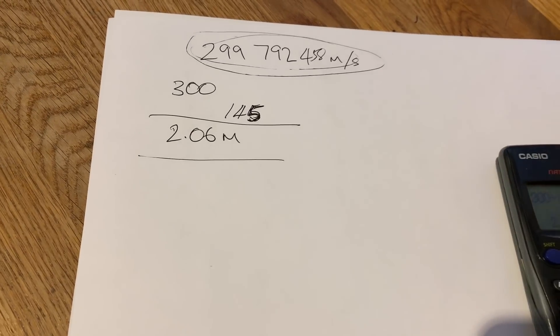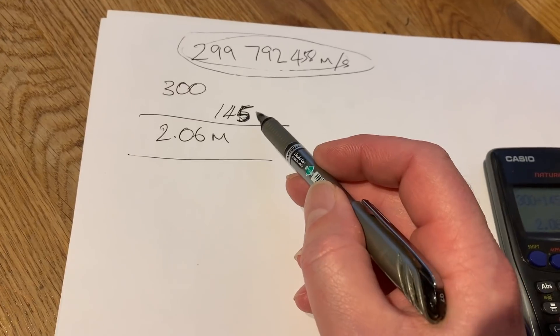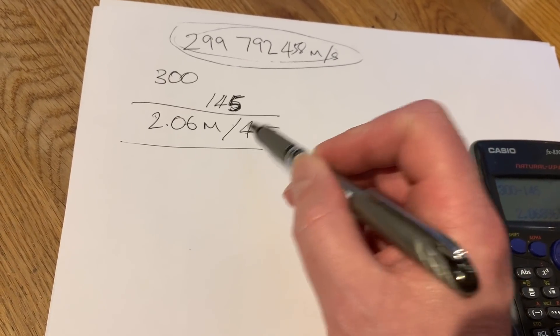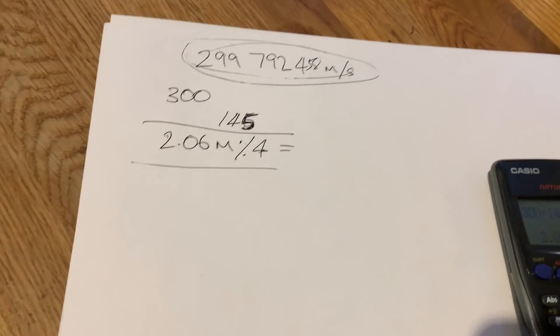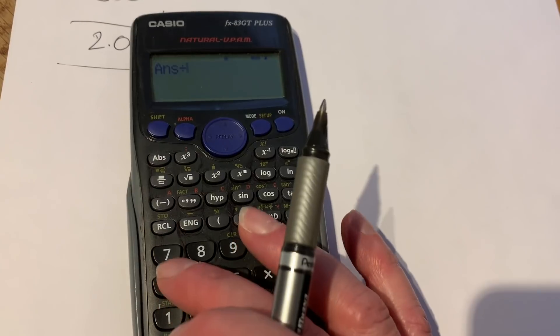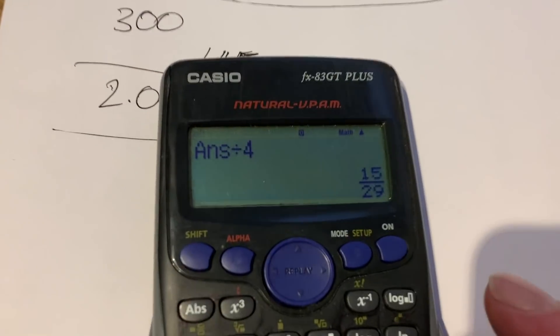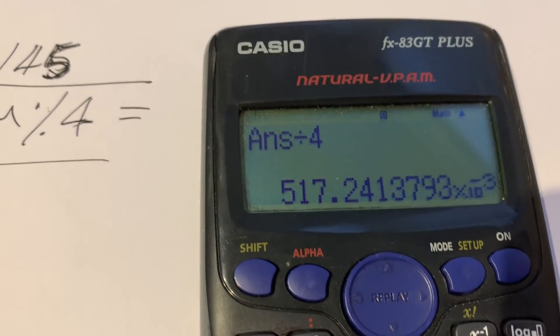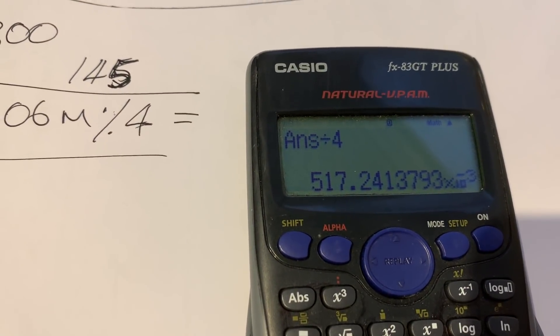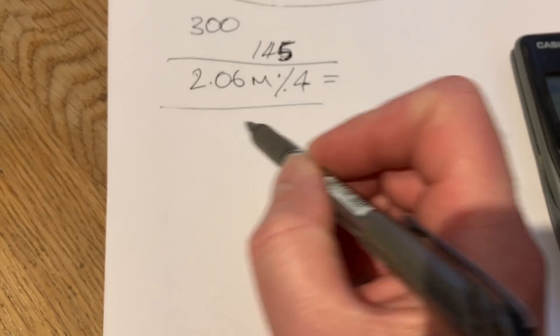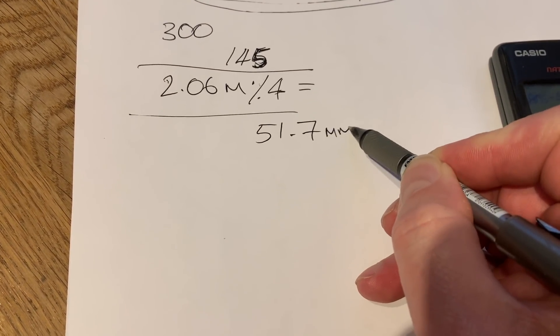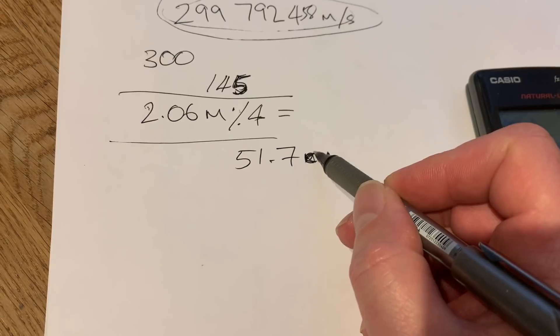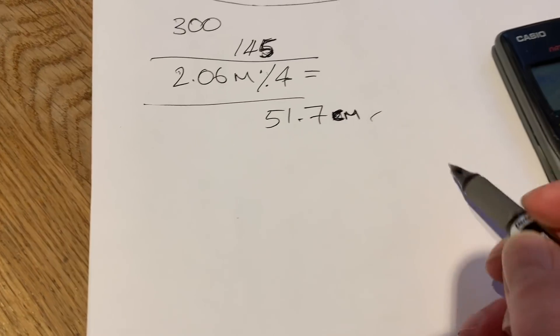So to make a quarter wave antenna for the 2 meter band, we basically divide our 2.06 and we divide that by 4. So divide by 4 equals, let's take that back to proper figures, so that is 51.7 centimeters, which is roughly half a meter. So that's for the two meter band.